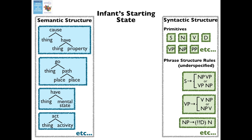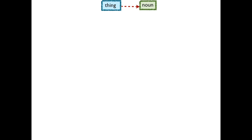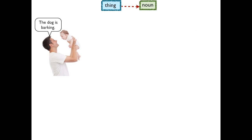Pinker argued that this could be surmounted if infants know how a few of the semantic representations map onto a few of the syntactic representations. For instance, Pinker posited that infants expect objects to be labeled by nouns. To see how this helps, consider what happens when she hears, for instance, 'the dog is barking.' Suppose she's learned that the word 'dog' means dog.